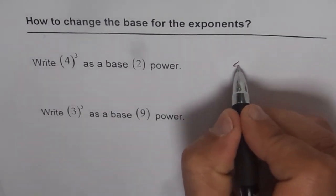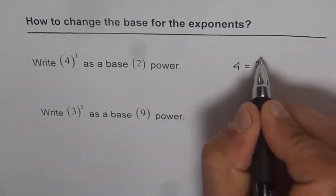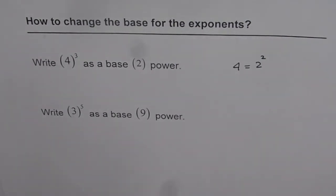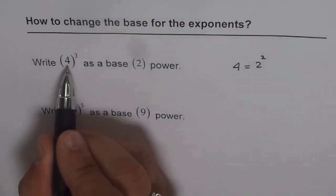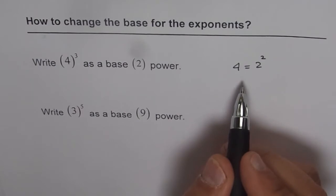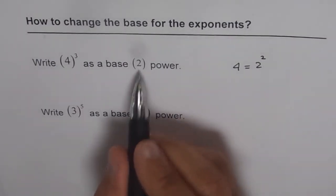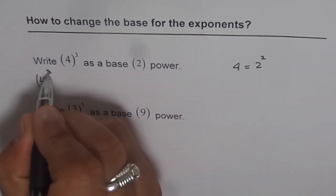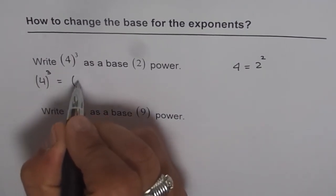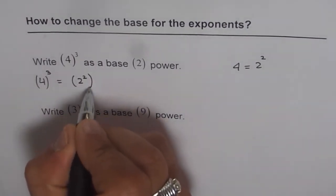As you know, 4 is equal to 2 square. And therefore, we can write 4 as 2 square and find what it should be with the base 2. So we can write 4 cube as equal to 2 square cube.